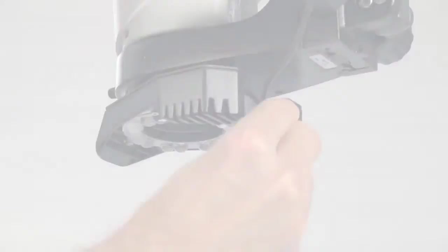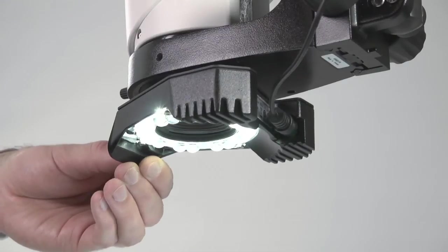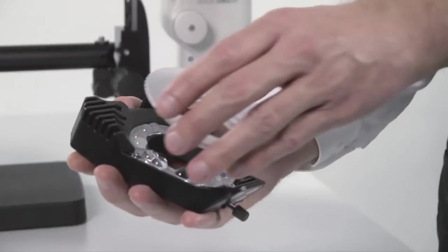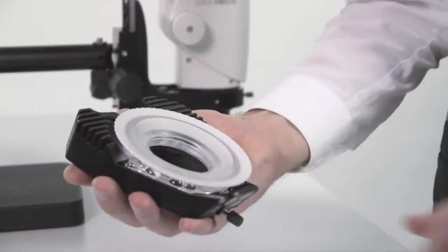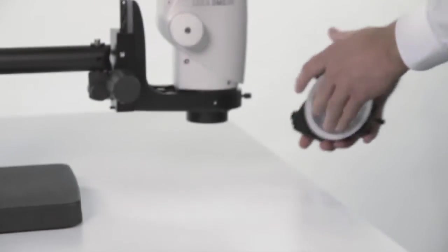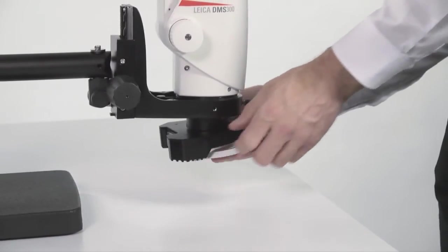And don't forget to connect the power supply. Should your application require it, you might want to use a diffuser on your ring light. If you would like to use a diffuser, we definitely recommend that you install it prior to attaching your ring light onto the objective. It's much easier.